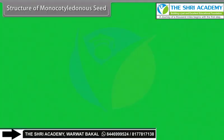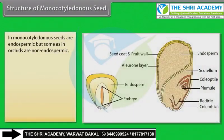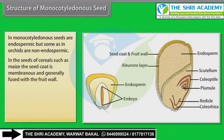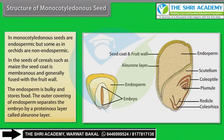Structure of Monocotyledonous Seed: Monocotyledonous seeds are endospermic, but some, as in orchids, are non-endospermic. In the seeds of cereals such as maize, the seed coat is membranous and generally fused with the fruit wall. The endosperm is bulky and stores food. The outer covering of endosperm separates the embryo by a proteinous layer called the aleurone layer.